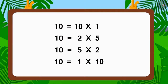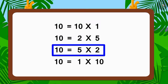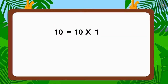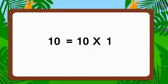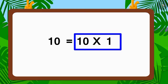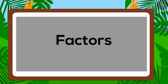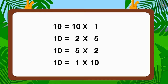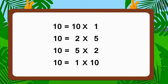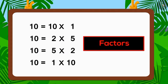Children, if you look closely, you will find that here we have written ten in four different forms of multiplication. This is how we can write any number as a multiplication of two numbers. The two numbers that form part of the multiplication are known as factors. Here, one, two, five, and ten are factors of ten.